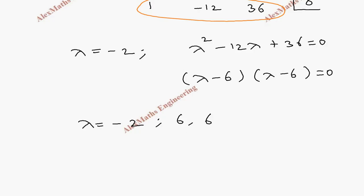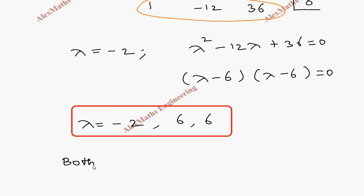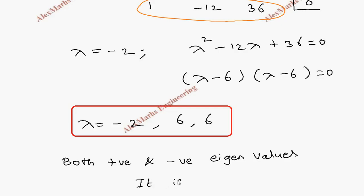These are the three eigenvalues. Since there are both positive and negative eigenvalues — minus 2 is negative and 6 is positive — therefore the quadratic form is indefinite.